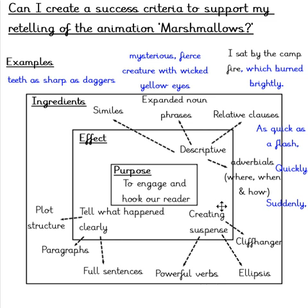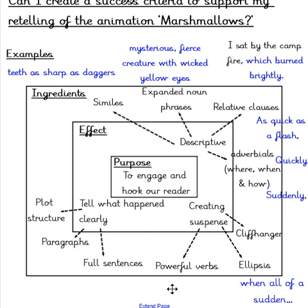Another effect I wanted to create was suspense. This can be achieved by including cliffhangers or sentences that include ellipsis — for example, 'When all of a sudden...' — and powerful verbs such as 'dashed,' 'scrambled,' and 'leapt.' These are better synonyms to replace words like 'walked,' 'jumped' or 'hurried.' Finally, telling what happened clearly follows the plot structure: starting with my opening, my build-up, moving to my dilemma, then to my resolution, and finally an ending. It is important to include paragraphs to structure my writing.